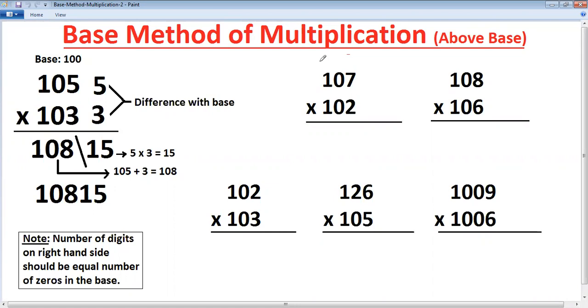107 multiplied by 102. So base is again 100. Difference 7 here. Just remove first one. Use the difference. 2. 7 into 2 is 14. That is the right hand side answer. Multiply differences. Cross addition like this. 107 plus 2 is 109. So final answer just join together. 10914 is the answer of this multiplication.